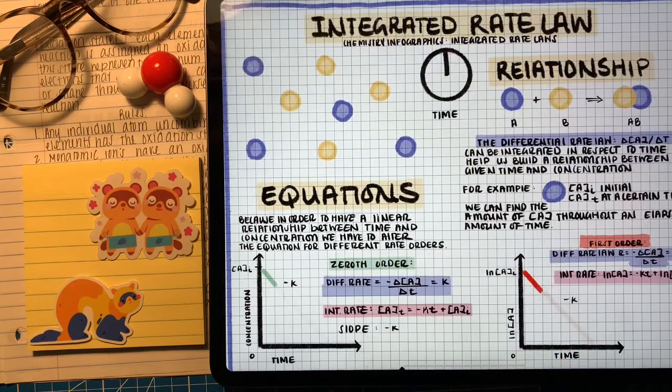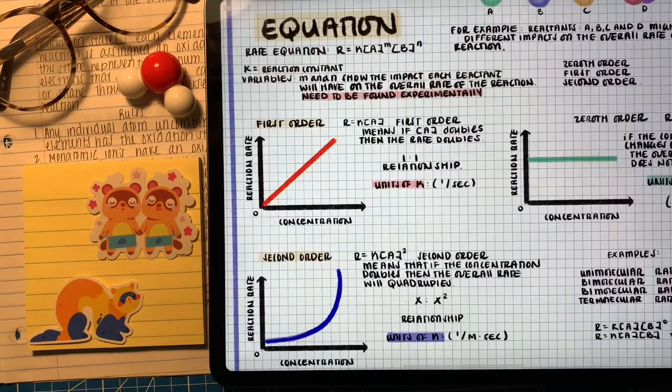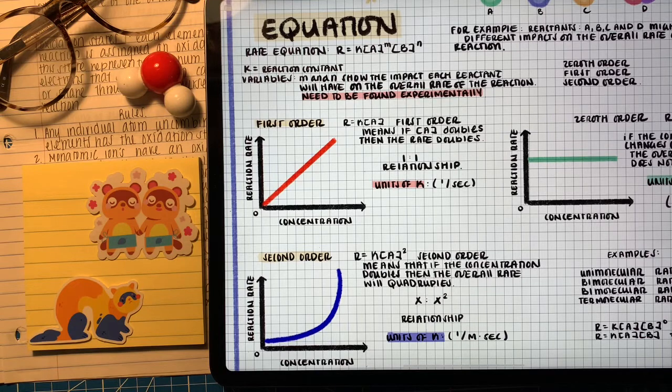The crucial part about this new relationship is that we have to make sure to build a linear relationship between concentration and time, but we know by studying the rate law that at different rate orders we have a different relationship with rate depending on how the reactant impacts the overall reaction rate.